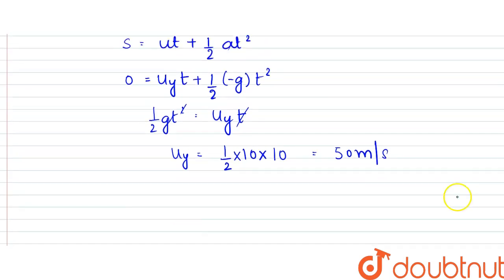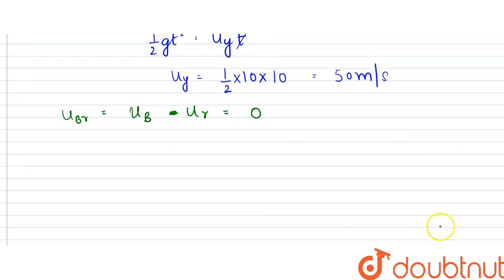Now what we are given is velocity of boat, initial velocity of boat with respect to river is 0. So that means ub minus ur is equal to 0. So ub would be equal to ur which is equal to 1 meter per second. So the boat is moving at 1 meter per second and the motor boat is at 2 meter per second.